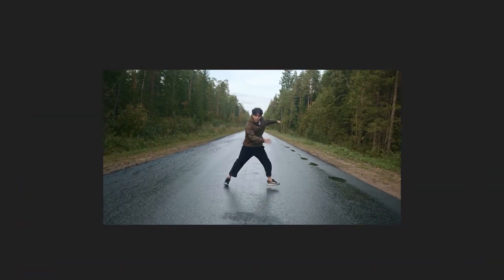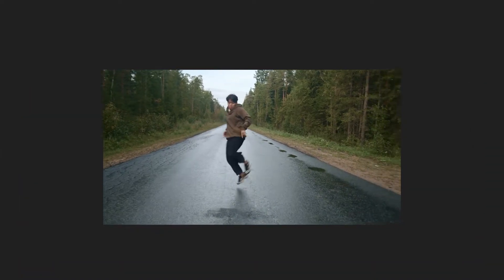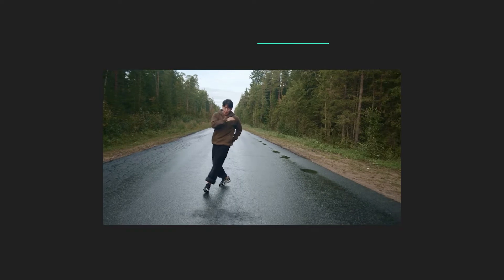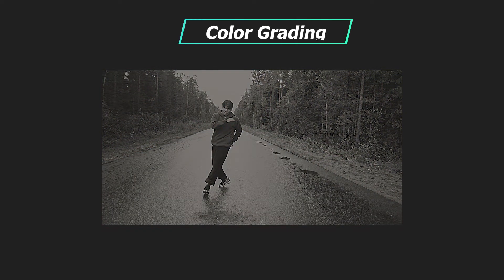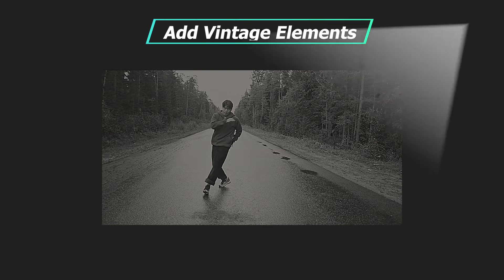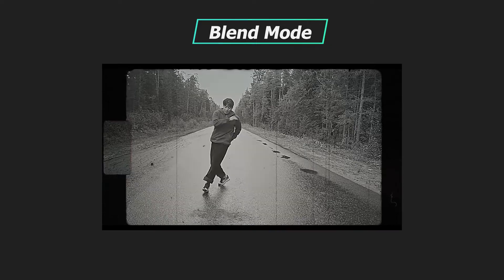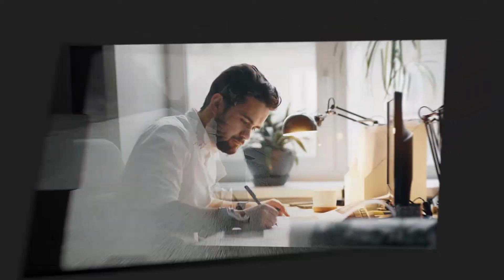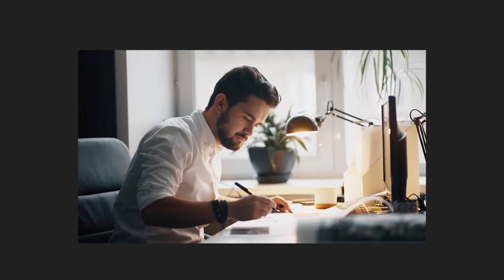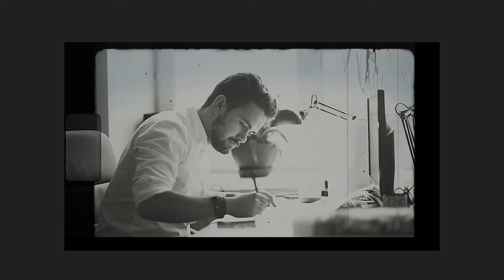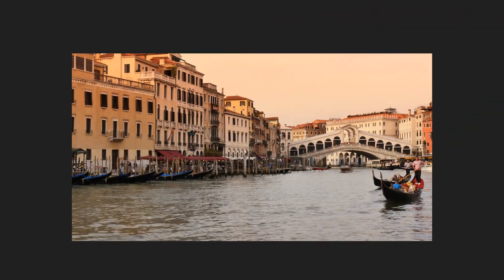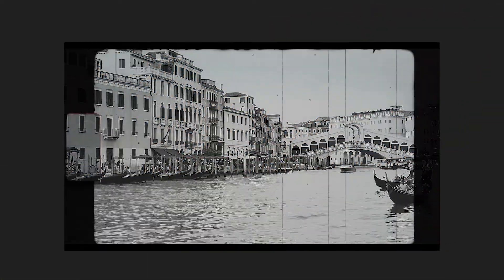It's easy to change the style of a video. Basically, we just need to color grade the video to change the tone, add some elements that look vintage, and then blend them together with the blend mode feature. After we figure out the principle of creating the vintage look, it's easy to see that we can change the style of videos captured by whatever cameras by following these simple steps.